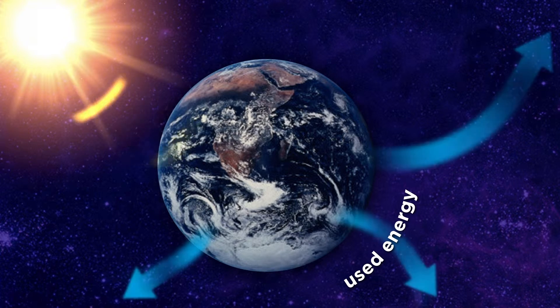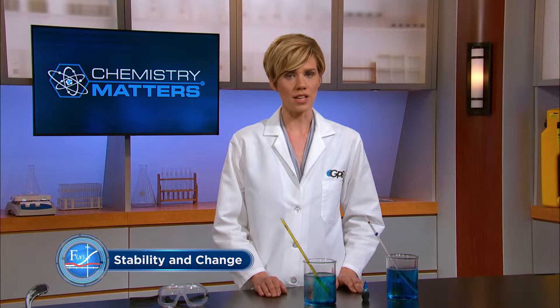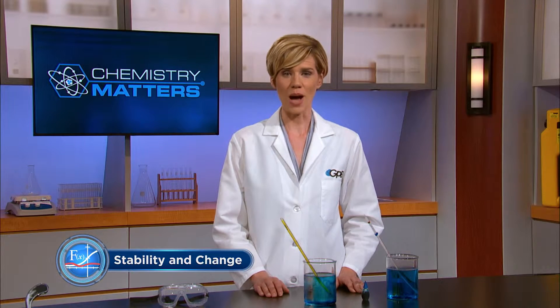With each conversion of solar energy to other forms of energy — to wind, chemical energy through photosynthesis, and to electrical energy through solar panels — the energy becomes more spread out, or dispersed, and less usable. Because the Earth is an open system, the dispersed energy eventually escapes into space and becomes completely unusable to us. Fortunately, sunlight is constantly providing new energy to this system, our Earth.